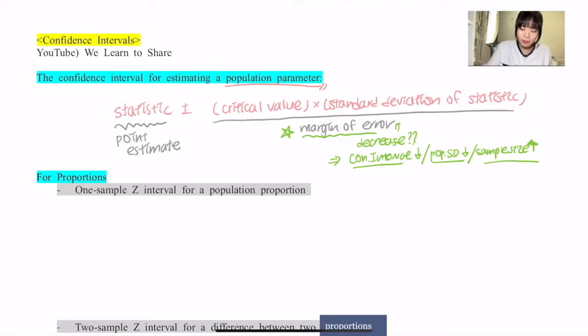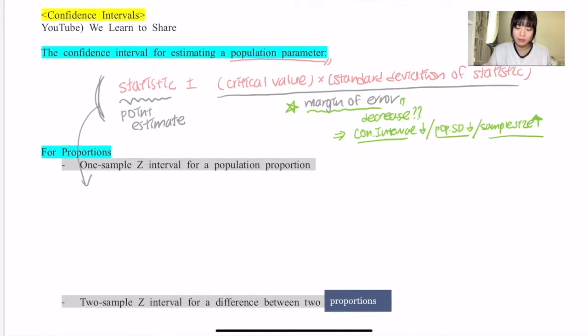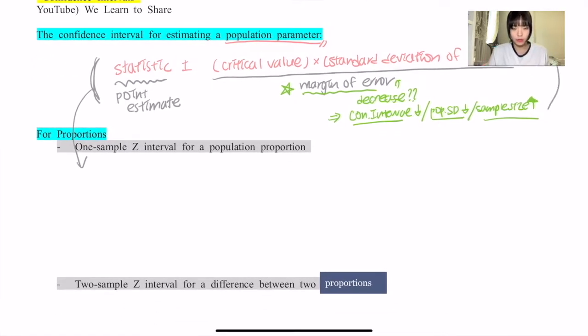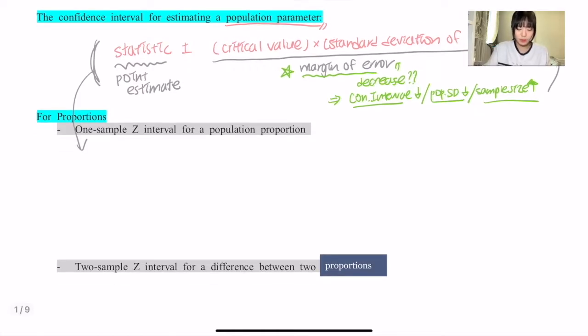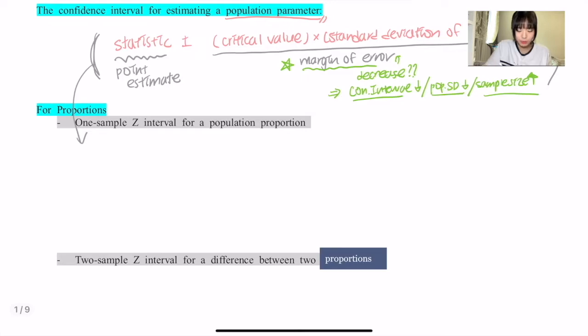Now we're going to apply this formula to calculate the one-sample Z interval for a population proportion. Your test statistic, or your point estimate, would be p̂ ± z, which is your critical value, and you will have √[p̂(1-p̂)/n] for the standard deviation of statistic.